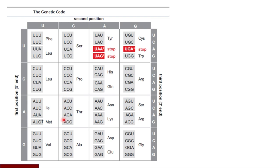This set of four codons — ACU, ACC, ACA, ACG — the third nucleotide base is varying, but still this set of four codons codes for threonine. This set codes for proline. The codons CAU and CAC code for histidine. CAA and CAG code for glutamine.